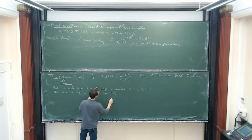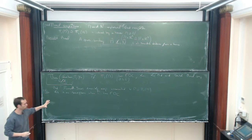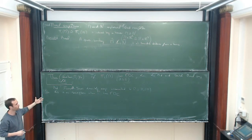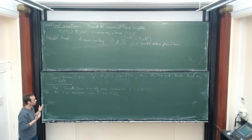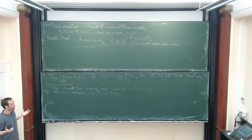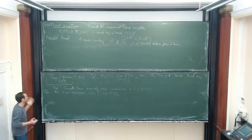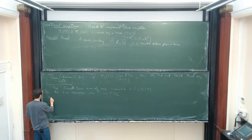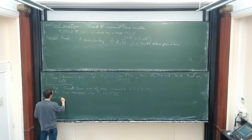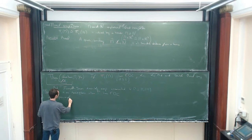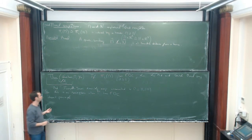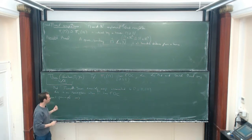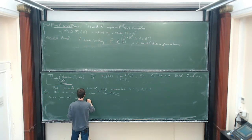At this point you can forget that your group is the π₁ of an aspherical manifold. It only has to be any countable group with a left-invariant metric which is proper and which has this FDC condition. But then at some point we use that Γ has a finite Kπ₁ to deduce injectivity of the usual assembly map.